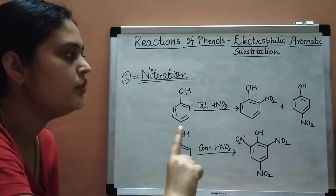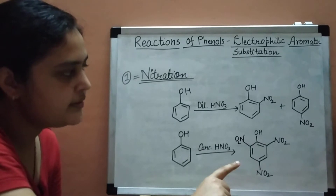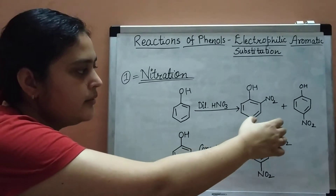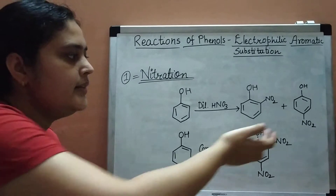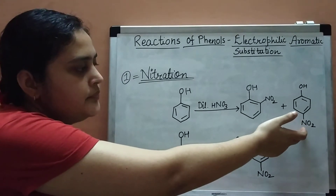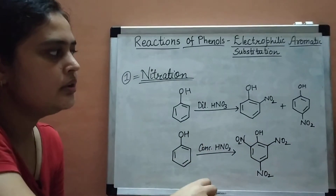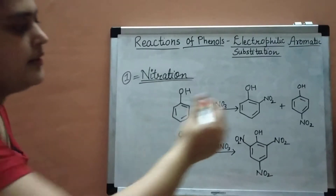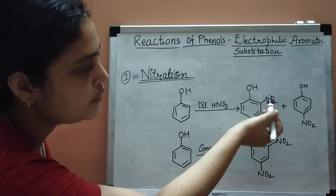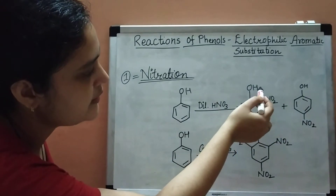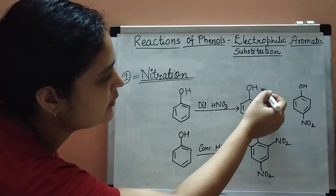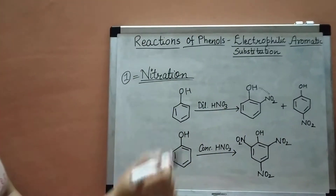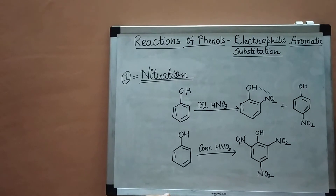If you want to separate ortho-nitrophenol and para-nitrophenol, you can use steam distillation. Ortho-nitrophenol is more volatile, so it gets separated out first, and then you can recover para-nitrophenol, which is less volatile. Ortho-nitrophenol is more volatile because it has intramolecular hydrogen bonding — the hydrogen makes a bond with one of the oxygen atoms of the nitro group within the same molecule.